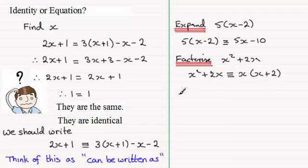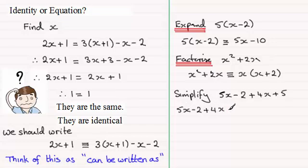You could see it when you're asked to simplify something. Let's just put an example here. Suppose you're asked to simplify, let's say 5x minus 2 plus 4x plus 5. Then with this one, how can we write 5x minus 2 plus 4x plus 5? How can we simplify it? Well, it can be written as, it's identical to then, 5x plus 4x which is 9x and minus 2 plus 5, well that's going to be plus 3. So again, we've got the identity sign. Whenever you're asked to simplify something.